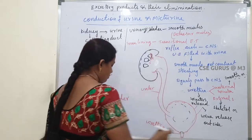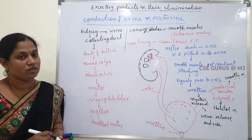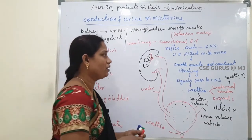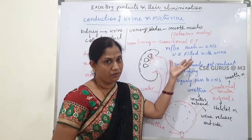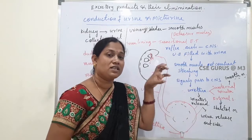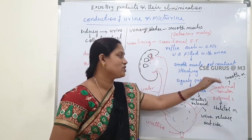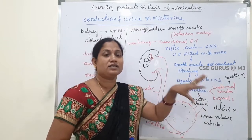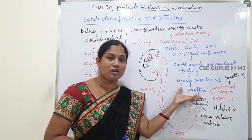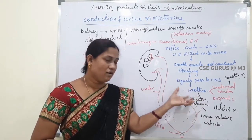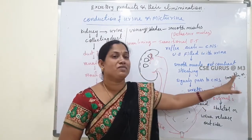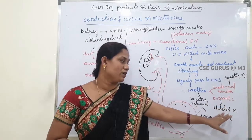This process is called micturition, and it is a reflex arc controlled by the CNS. Whenever the urinary bladder is filled with urine, the smooth muscles stretch, signals form and pass to the CNS. In the urethra, two sphincters are present: the internal sphincter made up of smooth muscle, and the external sphincter made up of skeletal muscle.